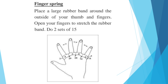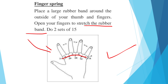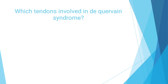The finger spread exercise: place a large rubber band around the outside of your thumb and fingers. Open your fingers to stretch the rubber band — this is for strengthening. Do 2 sets of 15 repetitions. Which tendons are involved in De Quervain's syndrome? Tell me the answer in the comments. Thank you.